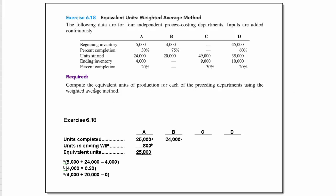The requirements of this problem tell you to compute the equivalent units of production for each of the preceding departments using the weighted average method. I'm going to show you how we could solve it for Department A and then give you a hint to get started for Department B.